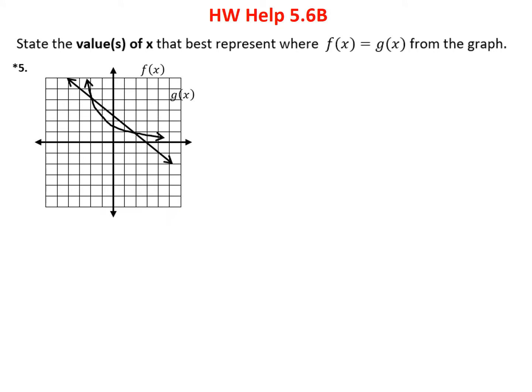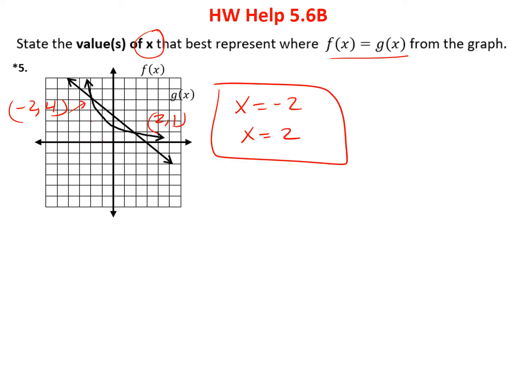Problem 5 asks for the values of x that best represent where f of x equals g of x. We find the intersection points and identify the x values. Looking at the graph, the first intersection point appears to be at (minus 2, 4), so x equals minus 2. The second intersection point is at x equals 2. So those are the two values of x where the two functions intersect — we're only interested in the x values.